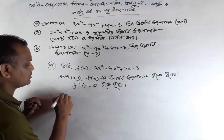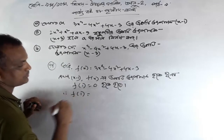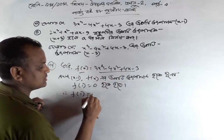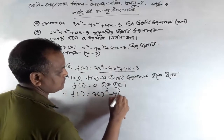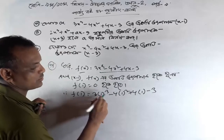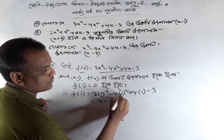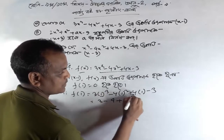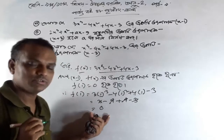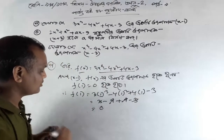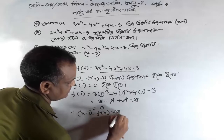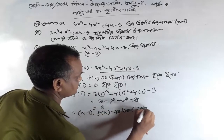Now let's see if 1 is 0. If x is 0, we will have 1. Then we will have: 1 cubed, 1 squared, 1 minus 3. 1 cubed must be 3. 4 minus 4 is equal to 4 minus 3. If x is equal to 0, we will have 0. Then we will have 1 F of X and 2 F of X.